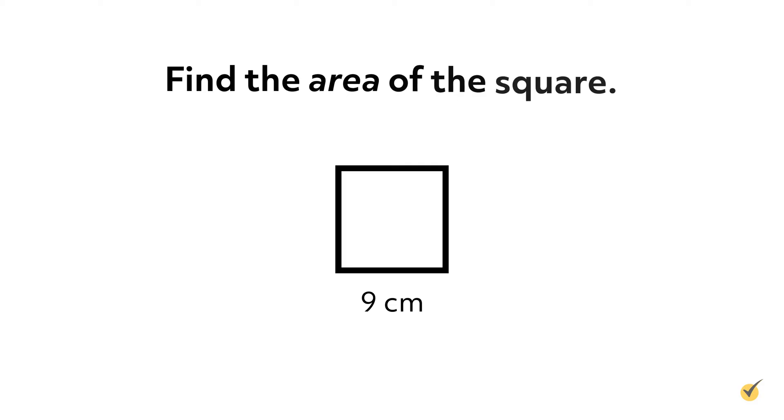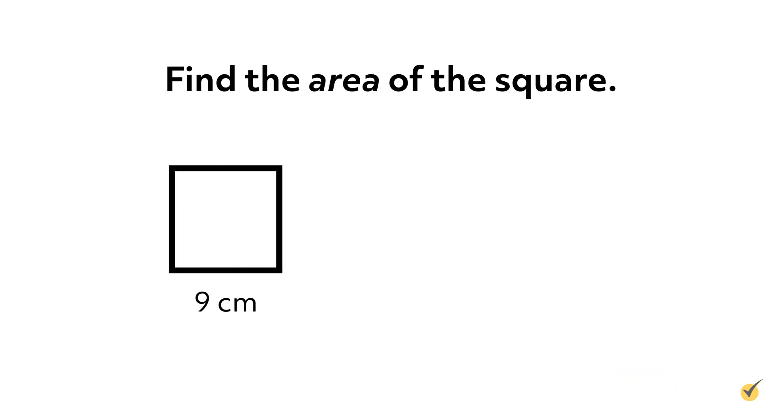Remember, we always measure area in square units like square feet, square inches, square meters, or square miles. Here's an example for you to try. Suppose you have a square that measures 9 centimeters on each side. What is the area of the square? Be sure to include units in your answer. Pause the video while you work out your solution, then continue when you are ready to compare your answer to mine. By our formula, the area of the square is A equals 9 centimeters squared, which is equal to 81 square centimeters. Did you remember to say square centimeters and not just centimeters? Some teachers and tests will count your answer wrong if you use the wrong units, so be very careful when writing out your units.